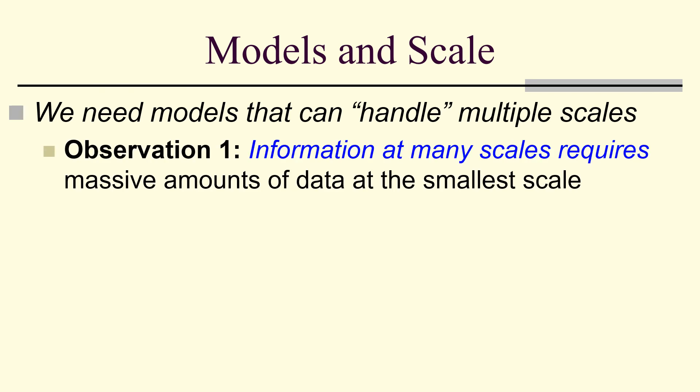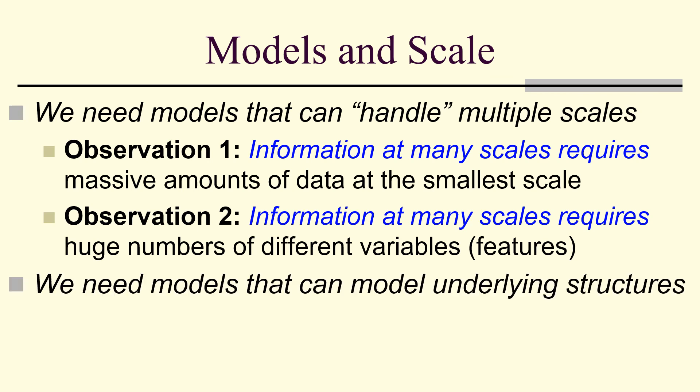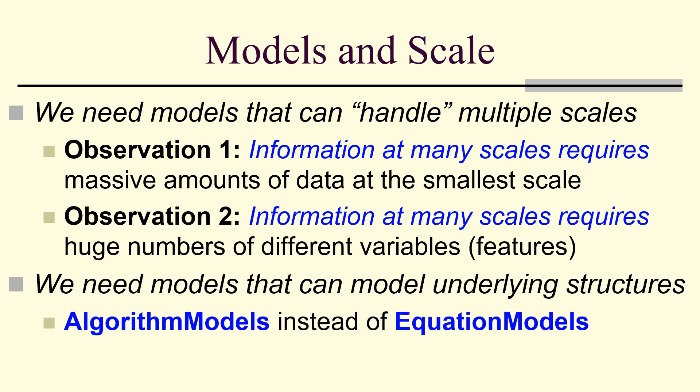Now, we notice information at many scales means we have massive amounts of data at the smallest scale. Information at many scales means we've got huge numbers of variables. We also need models that can model underlying structures.